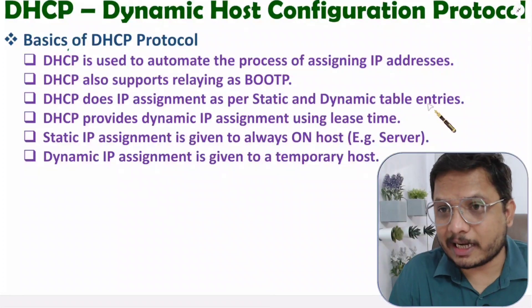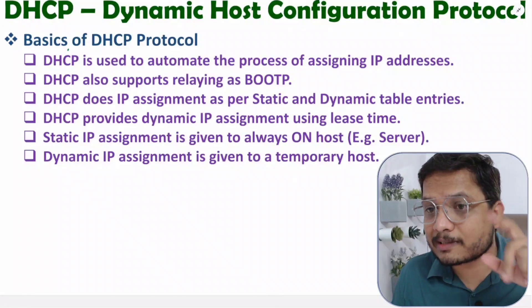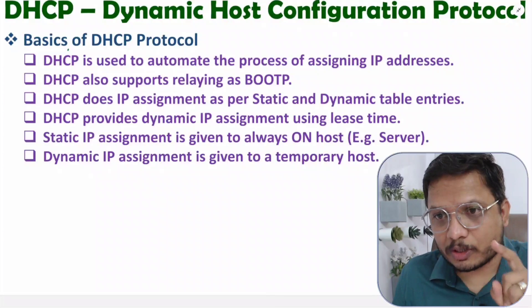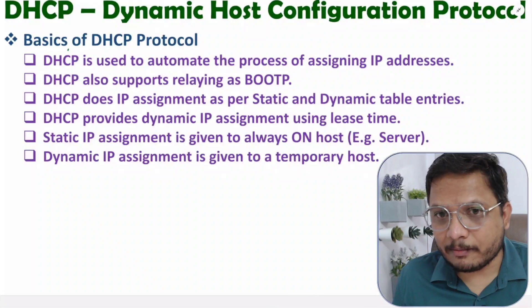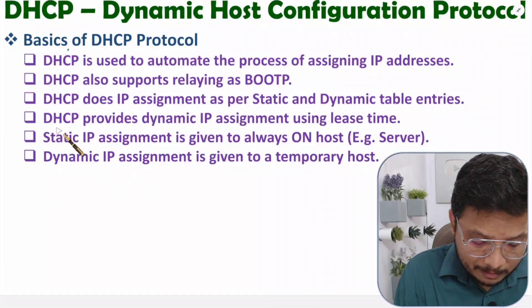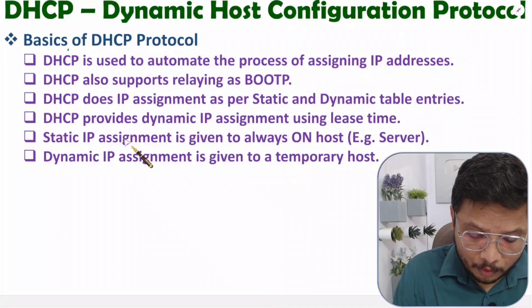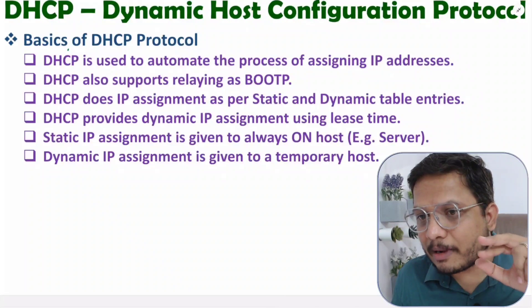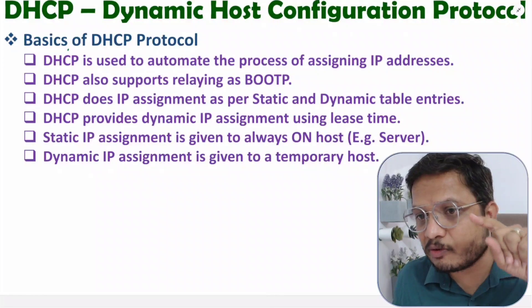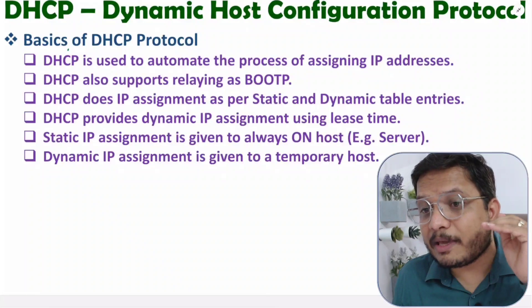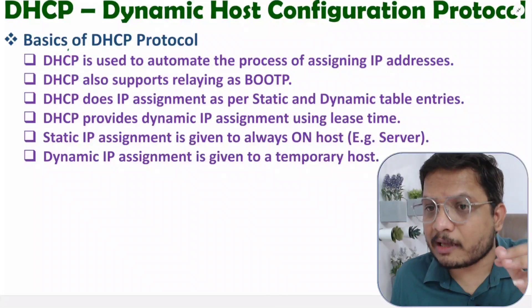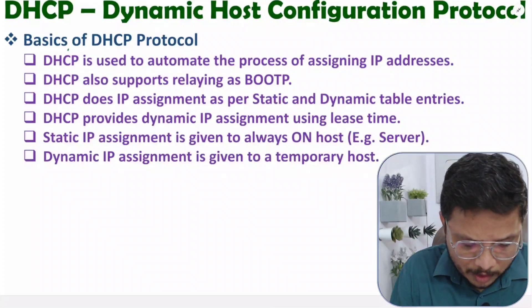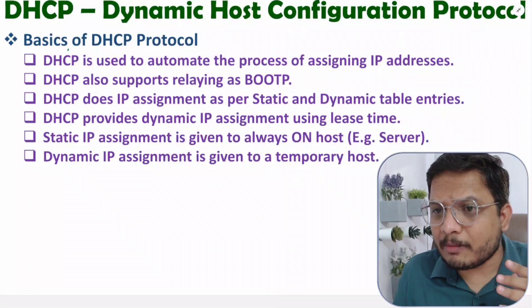DHCP protocol does IP assignment as per static and dynamic table entries. In working I'll show you how exactly it assigns IP as per static and dynamic entries. DHCP protocol provides static IP assignment for always-on type of hosts. Static IP assignment means that IP assignment will have a fixed IP address for a particular host. Fixed IP assignment is given to always-on hosts like servers, which are always on, so they must have static IP assignment.